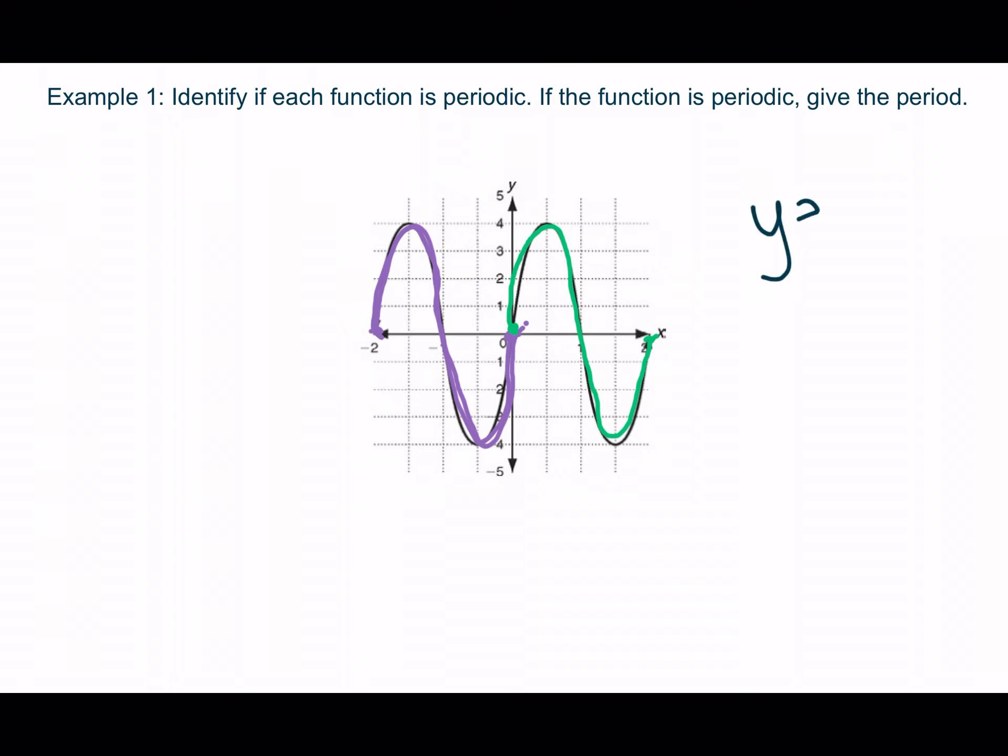And then the period, well, we want to find how many units did it go. So it started here at negative two, and then it ended over here at zero. So that means that the period is going to be two units. From negative two to zero, from zero to two. So the period repeats every two units.